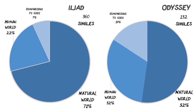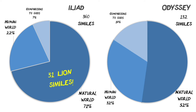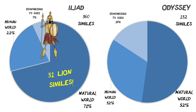So in the Iliad, you have 71% of your similes about the natural world. 31 similes are about lions, which makes a lot of sense when you think about fighters on the battlefield as if they are ravening for blood. 22% are about the human world and 7% are about comparisons to gods — and that's mostly Ares, the god of the violence of war, which again makes sense in a poem about warfare.